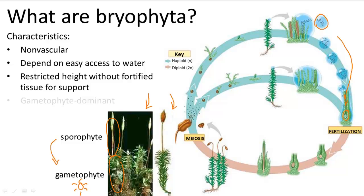So that means bryophytes are gametophyte dominant, spending most of their lives as multicellular haploid organisms. In this life cycle, we start with spores, which undergo mitosis to produce separate male and female gametophytes. These undergo mitosis again to produce their respective male gametes and female gametes, which join together, undergo fertilization, produce a zygote, which undergoes mitosis to produce spores, and the process starts over again.